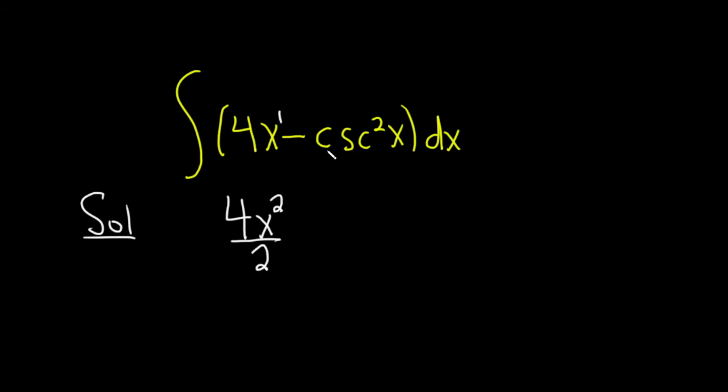When you're trying to integrate cosecant squared you have to ask yourself what is a function whose derivative involves this? Well, the derivative of cotangent is actually negative cosecant squared. So this is just going to be plus cotangent of x.